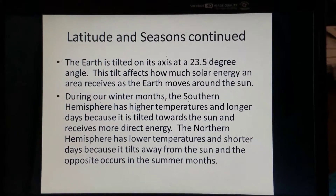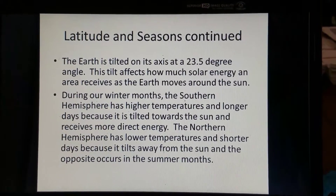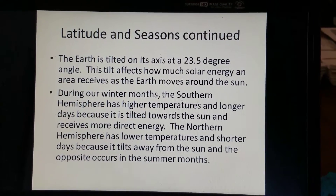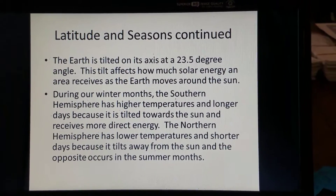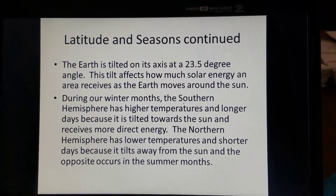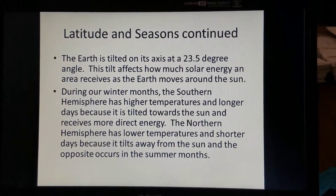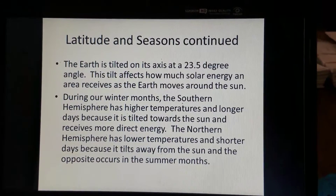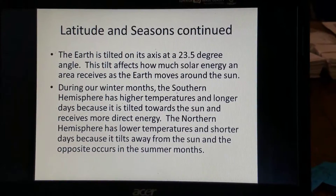What you need to keep in mind is that the Earth is tilted on its axis at a 23.5-degree angle. This is known as the plane of the ecliptic. This tilt affects how much solar energy an area receives as the Earth revolves around the sun. The Earth revolves around the sun and rotates on its axis at the plane of the ecliptic — 23.5 degrees — and that really impacts the amount of solar energy that reaches the surface.